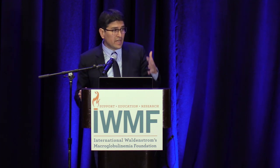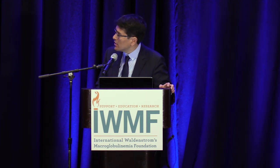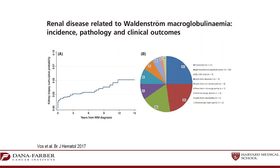Renal disease is something we don't see very much in Waldenström's. In myeloma, 40–50 percent of patients have kidney problems, whereas in Waldenström's it's approximately five percent at 15 years — a very rare occurrence. Myeloma doctors find this puzzling since Waldenström's also produces IgM and free light chains. We took all patients with kidney problems who had a kidney biopsy to confirm what we were actually dealing with.